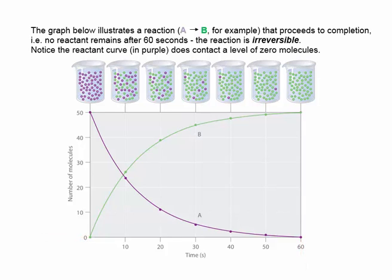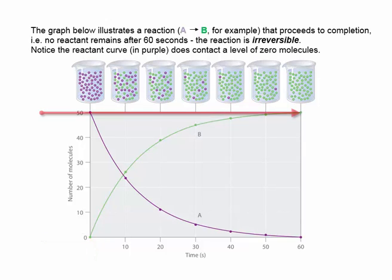The green curve, which represents the concentration of product molecules, starts off at 0 concentration at the beginning of the reaction at T0, and increases to a concentration of 50 after the reaction is complete at 60 seconds.